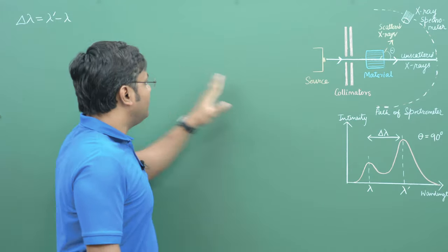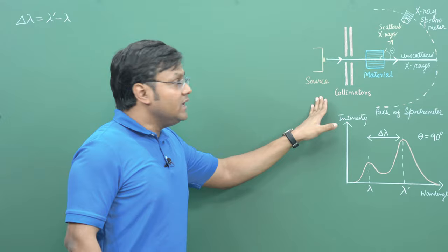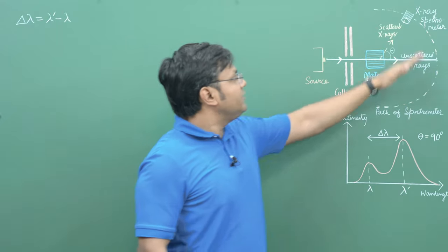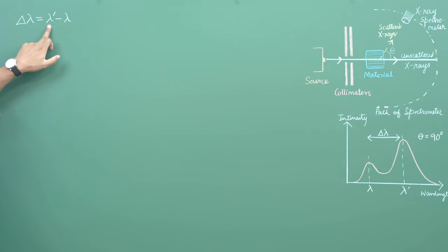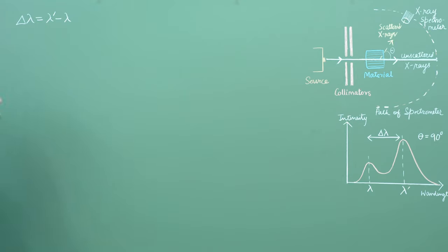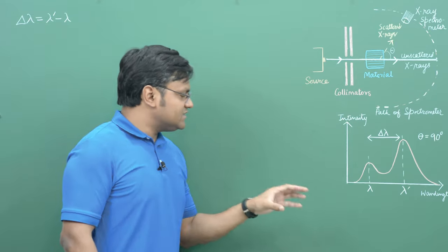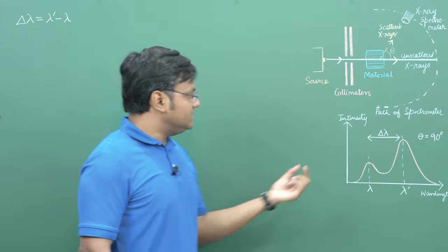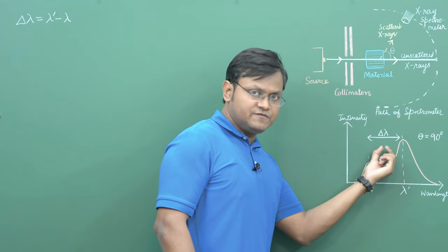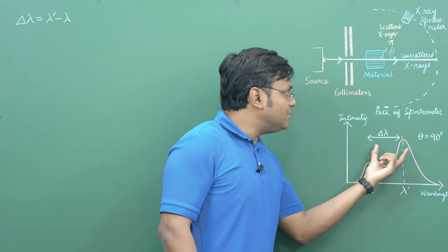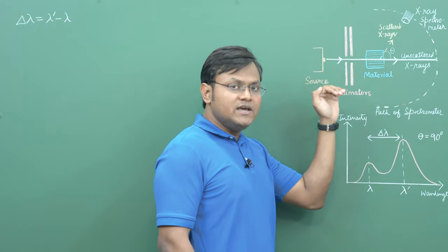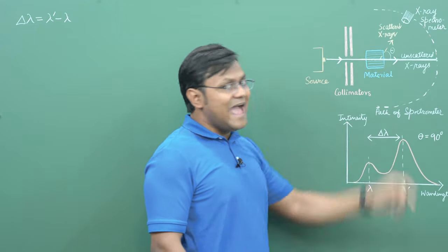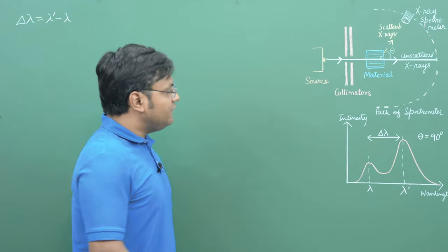When we observe what wavelength is detected by this detector, we get a graph where the x-axis has wavelength and the y-axis has intensity. Most of these graphs show two distinct peaks: one peak corresponds to the wavelength of the incident radiation, and there is an additional peak corresponding to a wavelength which is greater than that of the incident radiation. So essentially, in the scattered x-rays there is a wavelength larger than that of the source x-ray — there is some kind of a wavelength shift between the scattered radiation and the incident radiation.